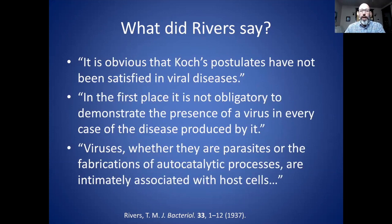He said, 'It's obvious that Koch's postulates have not been satisfied in viral diseases.' Granted, this was in 1937, but up to that time that was certainly as true as it is today. He also said, 'In the first place, it is not obligatory to demonstrate the presence of a virus in every case of disease produced by it.' I really don't understand the reasoning — if the virus is not present, how could you say it caused the disease? And the last quote: 'Viruses, whether they are parasites or fabrications of an autocatalytic process, are intimately associated with host cells.' This indicates a degree of uncertainty about the nature of viruses.